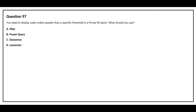Question number 97: You need to display sales orders greater than a specific threshold in a Power BI report. What should you use? Option A: filter. Option B: Power Query. Option C: Dataverse. Option D: connector. The correct answer is option A, filter.